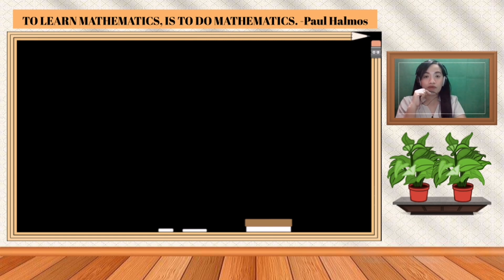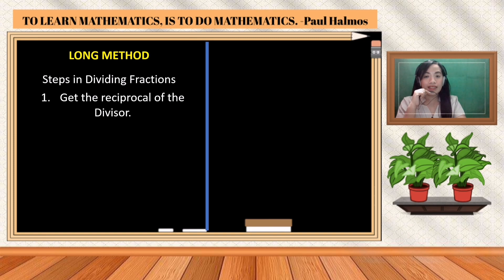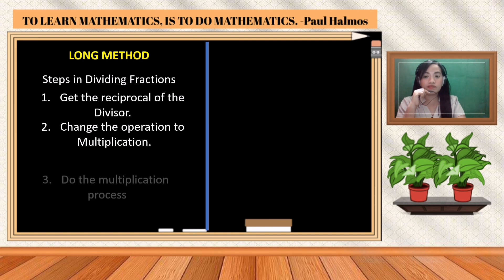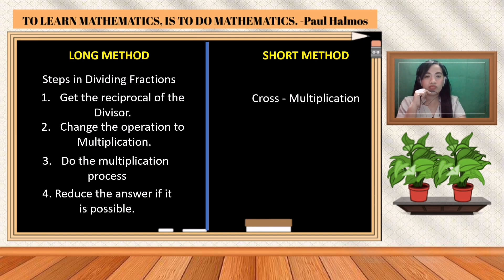Remember: it is up to you whether to use the long method or the short method in dividing fractions. For the long method, follow these steps: step one, get the reciprocal of the divisor; step two, change the operation to multiplication; step three, do the multiplication process; step four, reduce the answer if possible. For the short method, just use cross multiplication and always reduce the answer if possible.